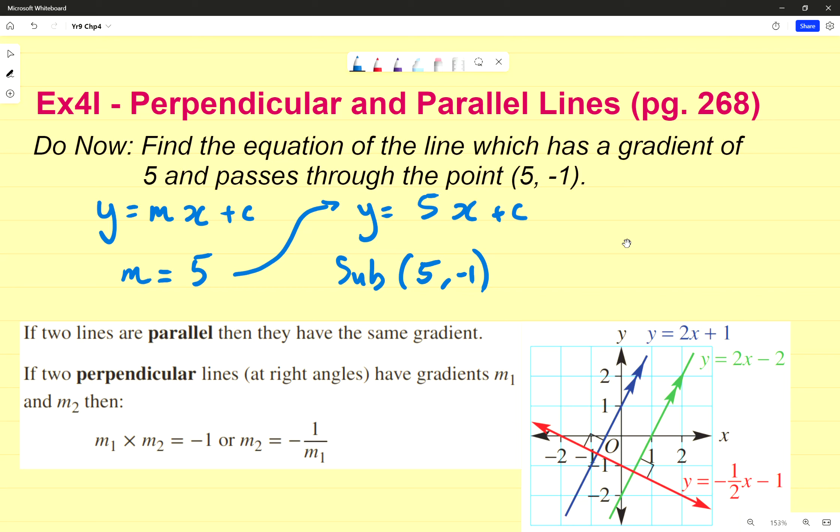So we're replacing m with 5 because the gradient is 5, and we end up with y equals 5x plus c. Once we've done that, we just need the other bit of information to find c itself. So what I'm going to do is I'm going to substitute (5, -1). I'm going to identify, and you don't have to write this step out, this is just to explain it. Identify that that's x and that's y. The 5 is the x and negative 1 is the y. I'm going to rewrite this equation right here with those numbers. So that becomes y, which is negative 1, equals 5 times 5 because x is 5, plus c, which I know is negative 1 equals 25 plus c. And so if I subtract 25 on both sides, I get negative 26.